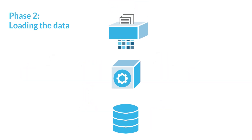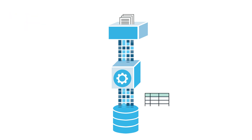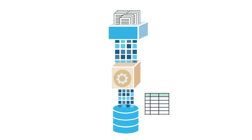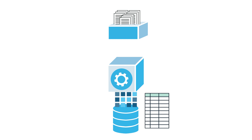Phase two requires a running virtual warehouse. The warehouse extracts the data from each file and inserts it as rows in the table. Warehouse size can impact loading performance. When loading large numbers of files or large files, you may want to choose a larger warehouse.